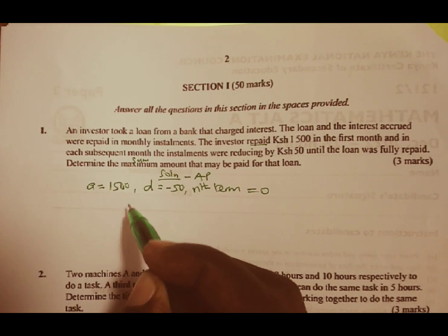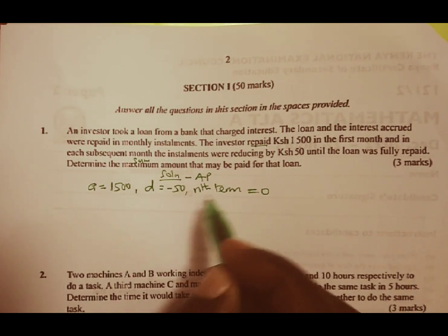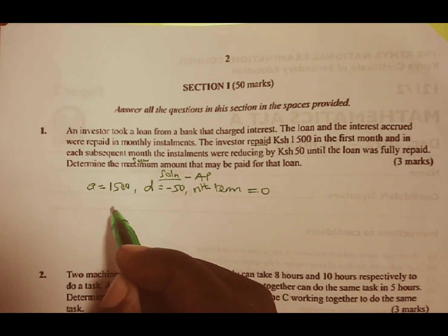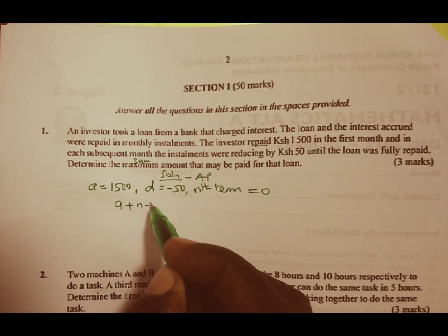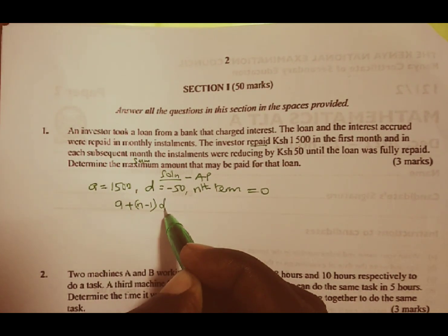In this case, we know that the nth term in an AP is given by A plus (N minus 1) multiplied by D.